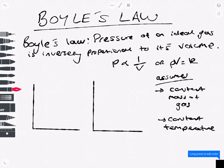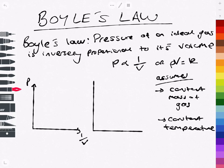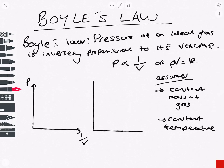Let's try and draw some graphs relating pressure and volume. We know that pressure is proportional to 1 over volume, so if we were to draw a graph of pressure against 1 over volume, they are proportional to each other. We would end up with a straight line through the origin, where the gradient is equal to the constant K.